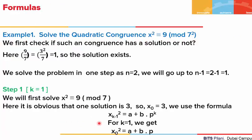Let us look at an example. Here, we are asked to solve the congruence x² ≡ 9 mod 7². We will first check whether it has a solution or not. For that, we form the Legendre symbol (9/7). As 9 is 3², we have (3²/7), whose value will be 1. So the solution exists. The power of 7 is 2, so n minus 1 steps are required — that is, 2 minus 1 equals 1 step.